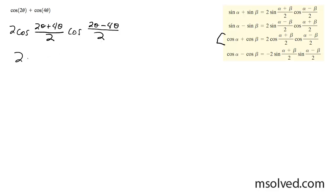So we have 2 cos 6 theta divided by 2 cos negative 2 theta divided by 2.